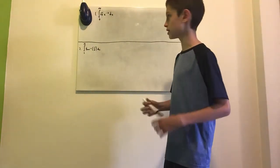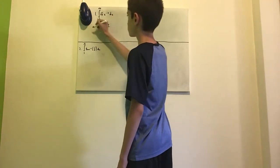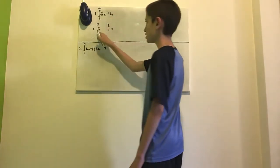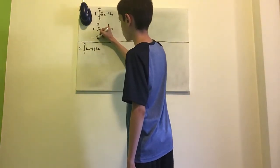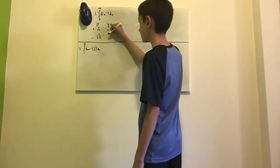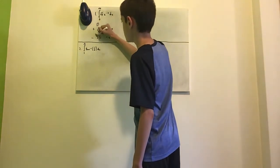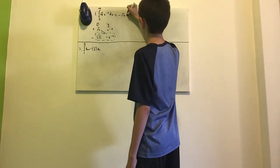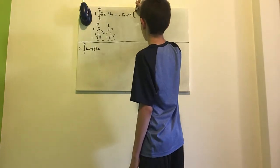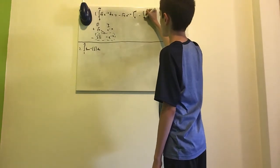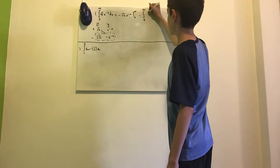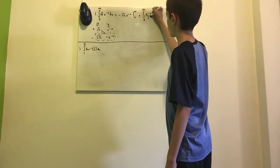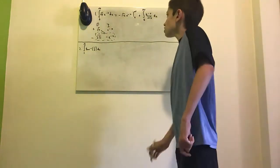We will use integration by parts to begin. We will differentiate the square root of x and integrate e to the minus x. Differentiating the square root of x gives 1 over 2 square root of x, and integrating e to the minus x gives negative e to the minus x. So we have negative root x times e to the minus x evaluated at 0 and infinity, minus the integral from 0 to infinity — it's a plus because we have minus minus — of e to the minus x over 2 square root of x dx.